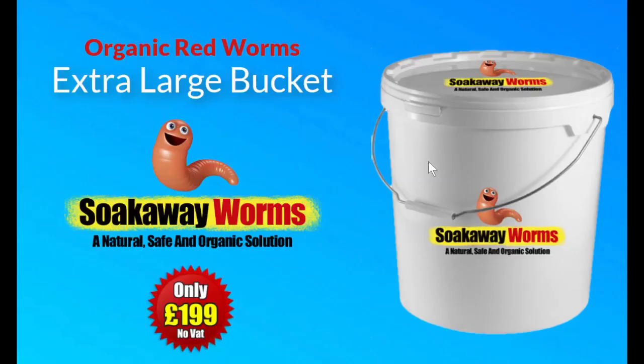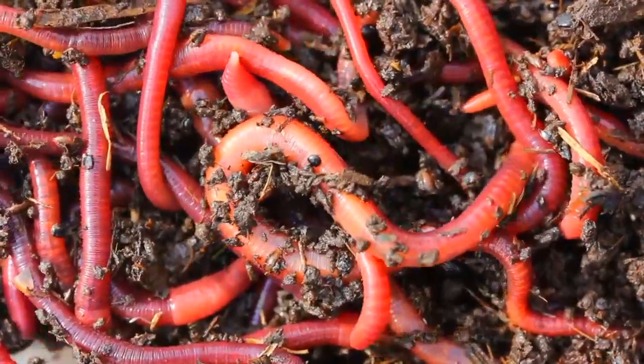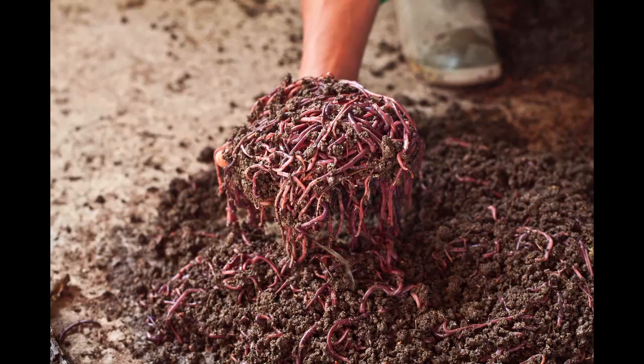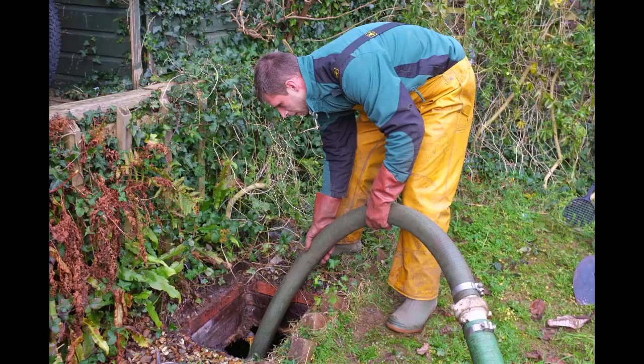Let's just recap what you're getting today when you take advantage of this amazing offer. You're getting an extra large bucket of my premium product, Organic Red Soakaway Worms. Soakaway Worms unblock soakaways and prevent them from becoming blocked again. Because they eat all the fat and the grease and the sludge, there's nothing to be sucked out. So you'll also save hundreds of pounds each year in septic tank emptying costs.